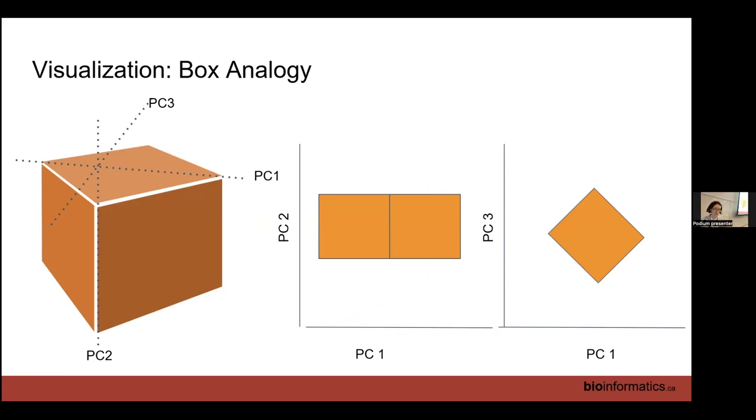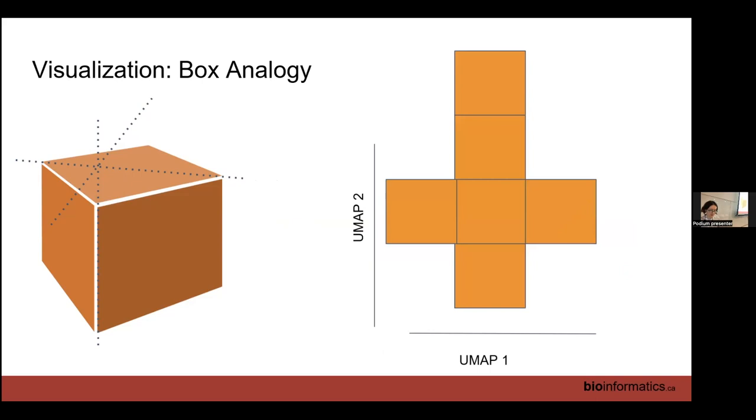An alternative is what UMAP and t-SNE do, which is essentially they unfold the box to put it flat on the page. So now we can see all of the sides of our box at the same time, which is nice. But we've got some strange things. This edge and this edge up here, in 3D those two are touching each other. But here on the plot, they're very far apart. The same thing with this edge. In 3D, they're touching each other or very close to each other, but on the plot, they look very far apart. So it's important to keep that in mind when you're looking at t-SNE or UMAP. Things that are very far apart may not actually truly be very far apart.